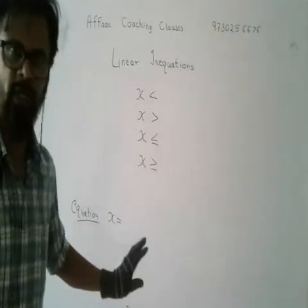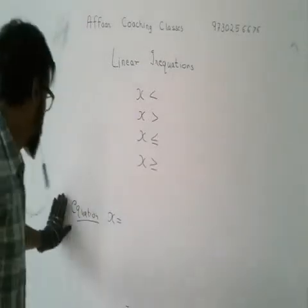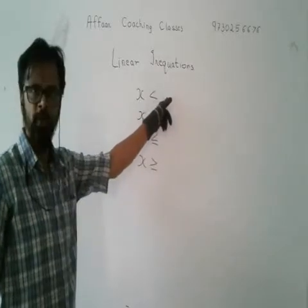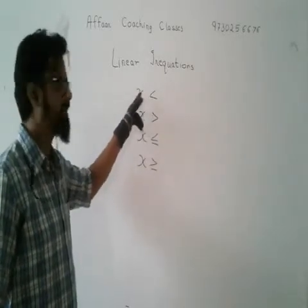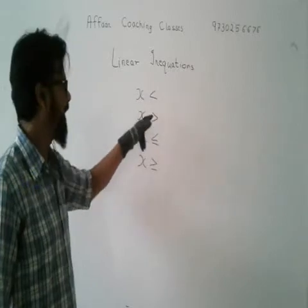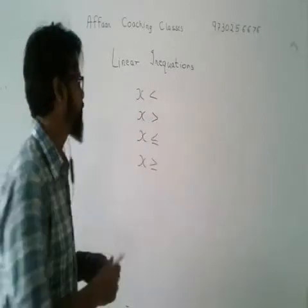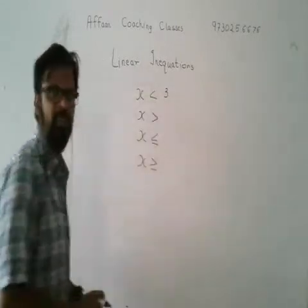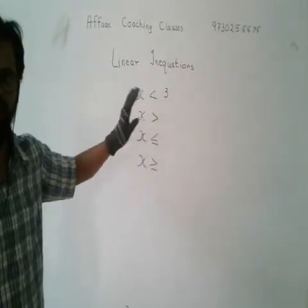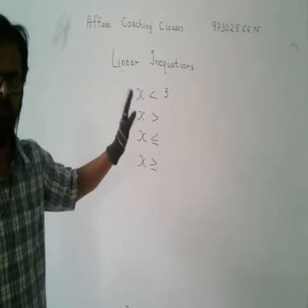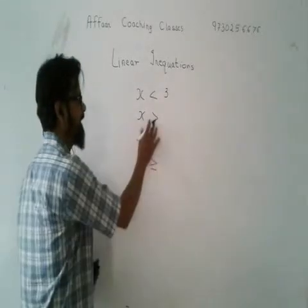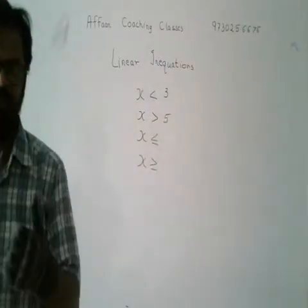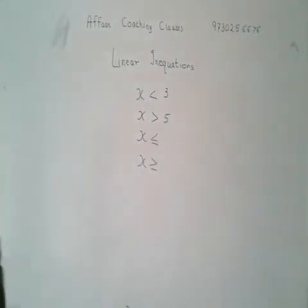In inequations, x is less than a value or greater than a value. For example, if x is less than 3, that means x can be 2, 1, 0, minus 1, and so on. And if x is greater than 5, that means x can be 6, 7, 8, and so on.